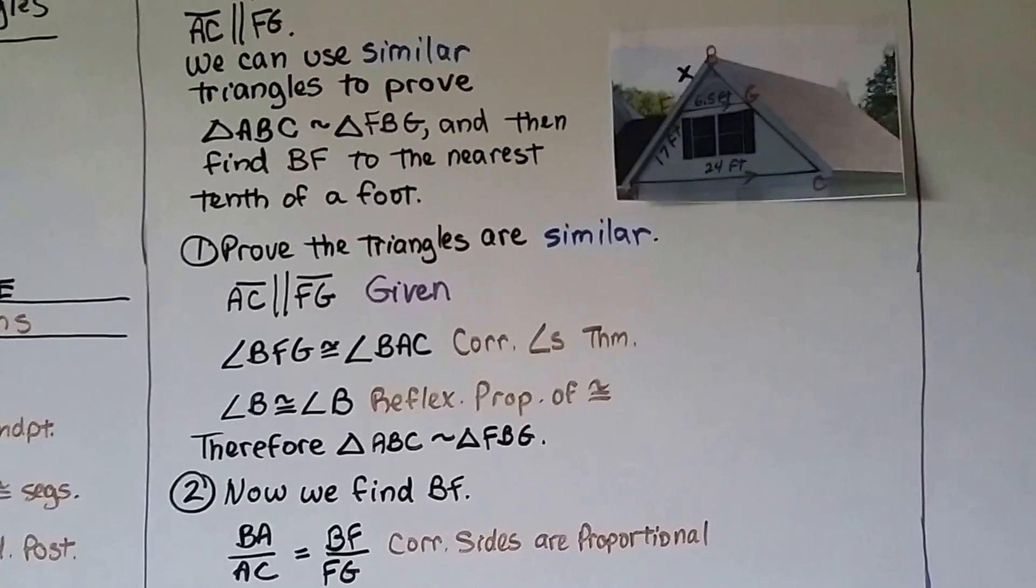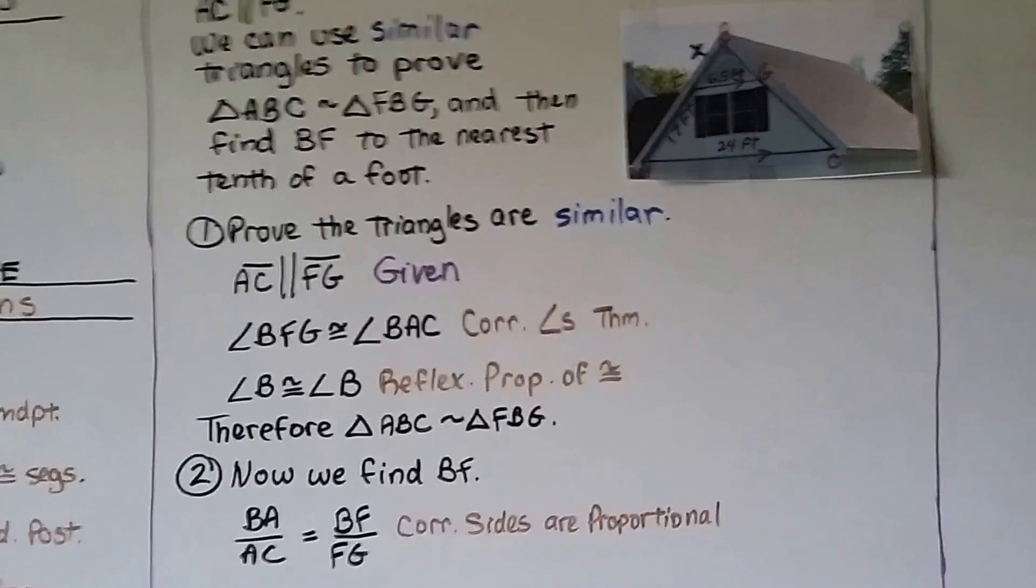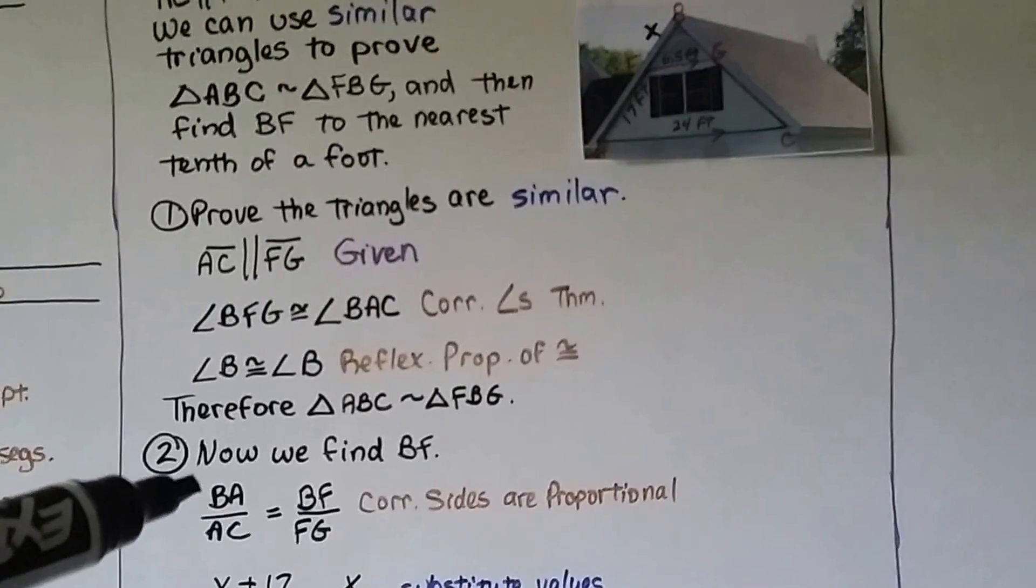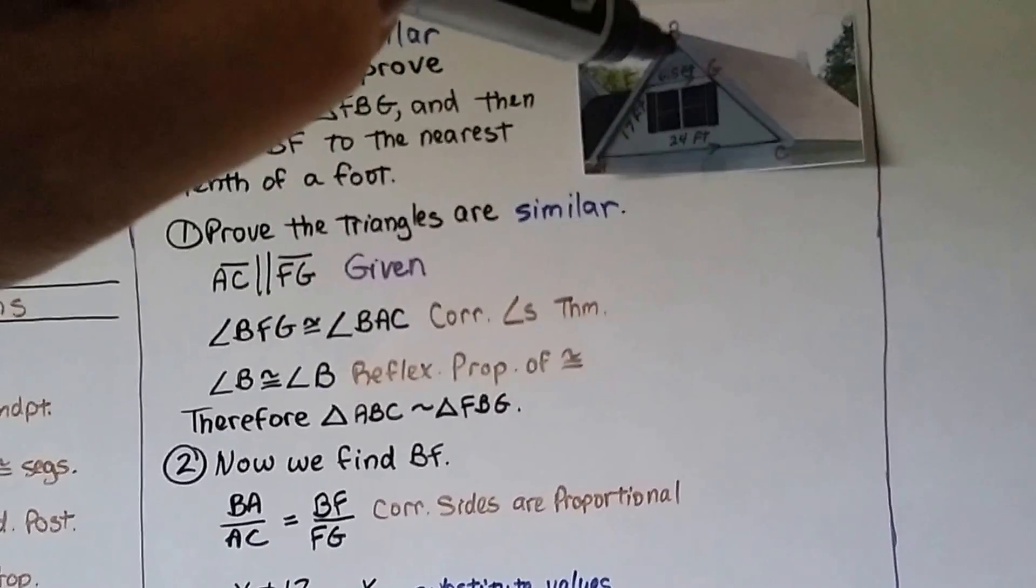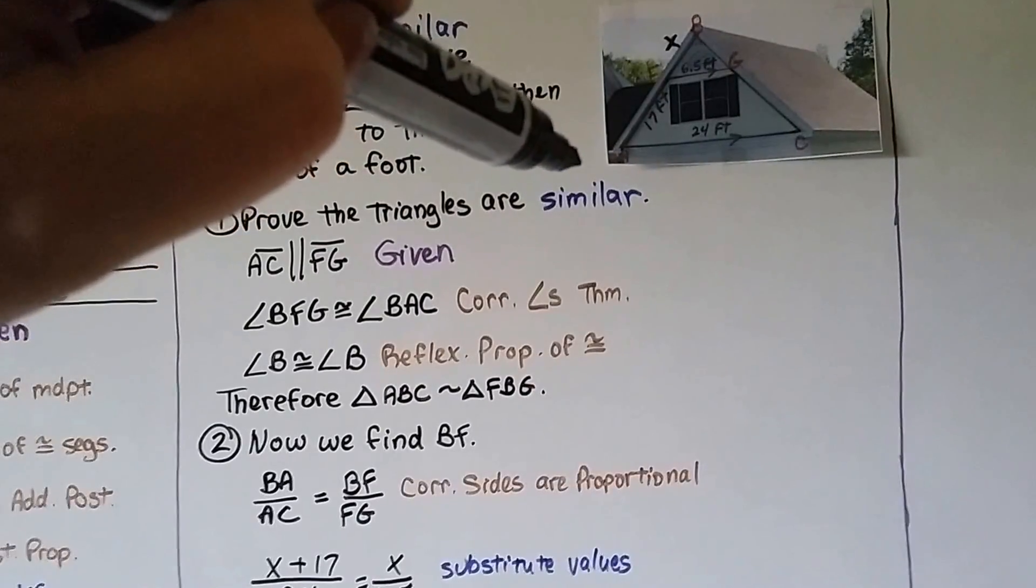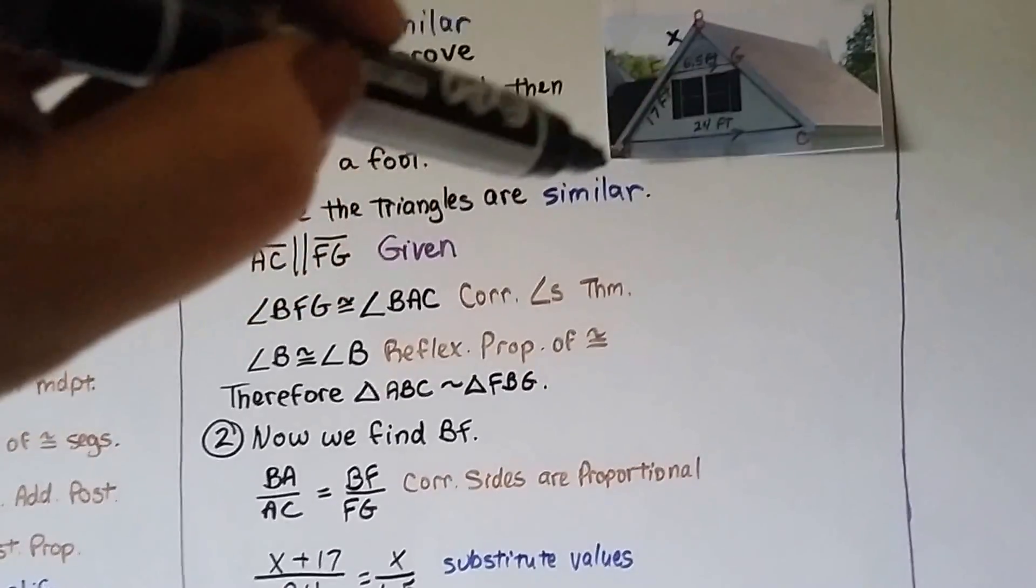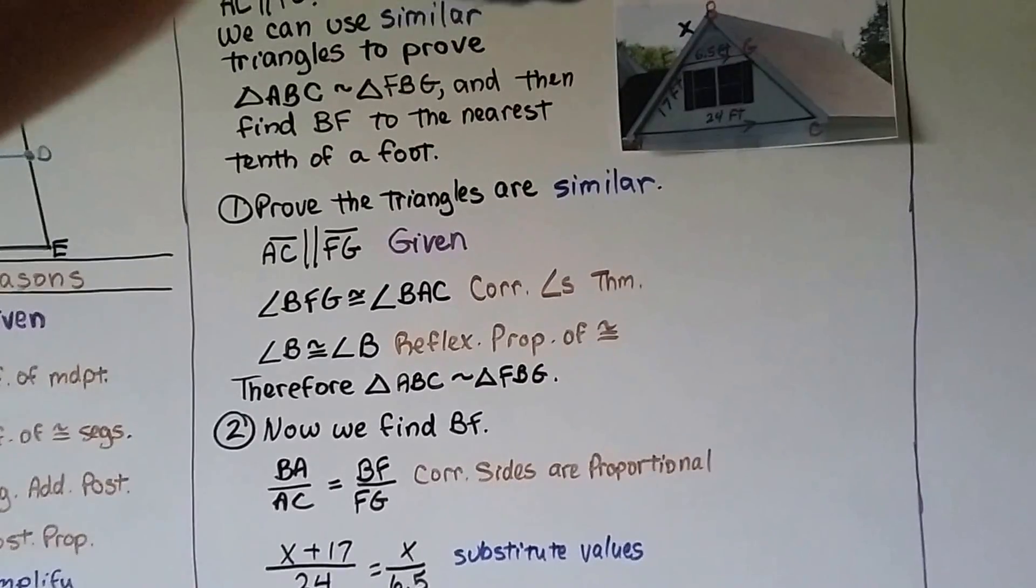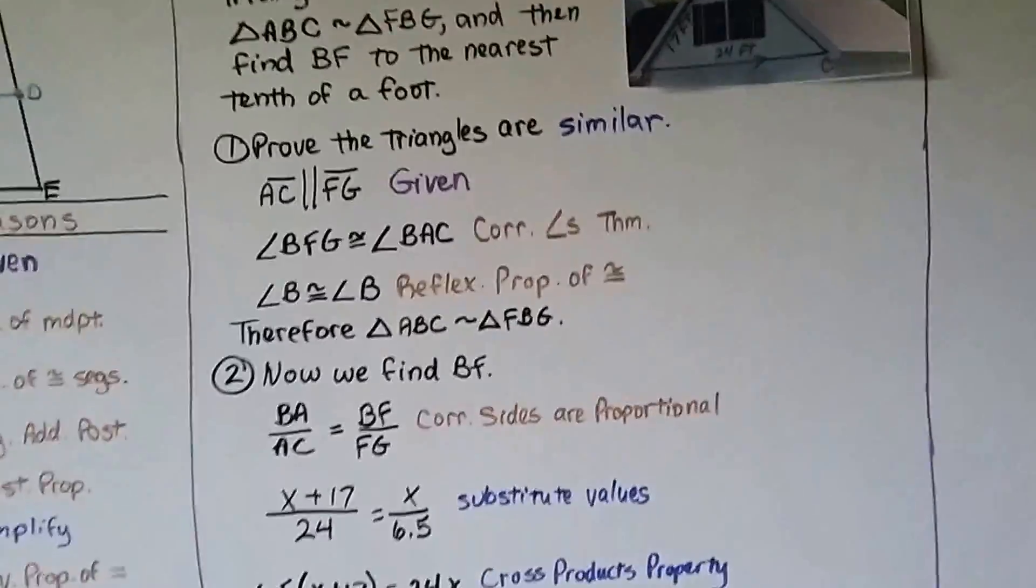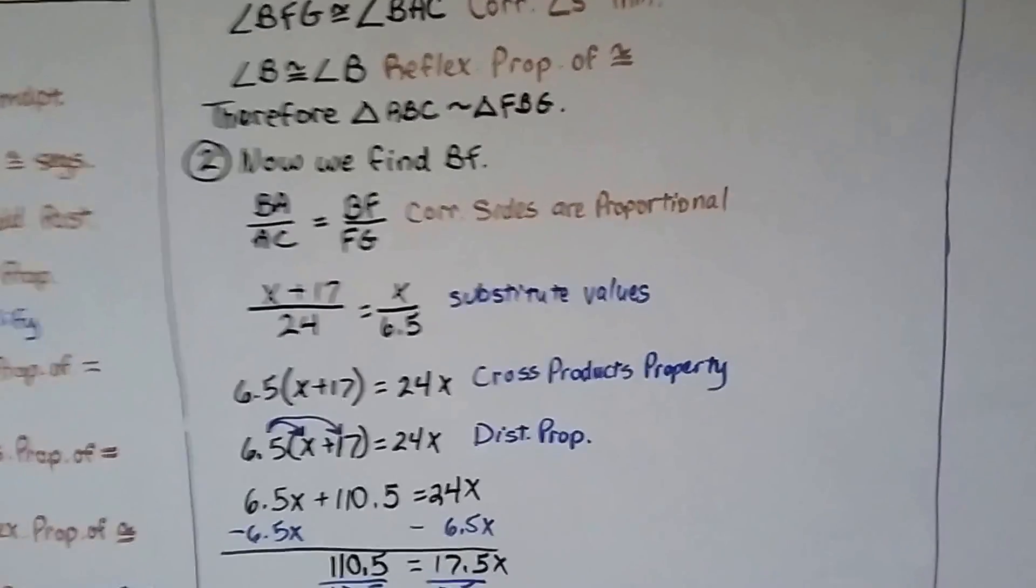Now that we've proven that they're similar, now we can find BF, this X. So we could put BA, this whole side length, over AC, the 24 feet. Then we can put BF, this X, over the 6.5. That's corresponding sides are proportional.